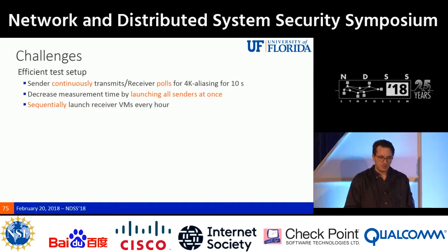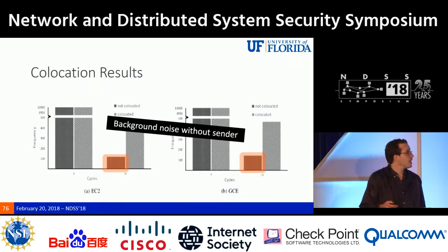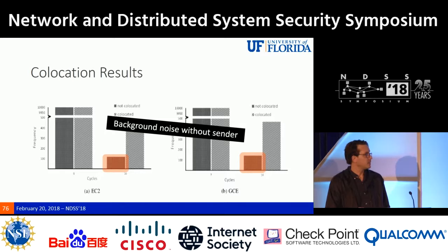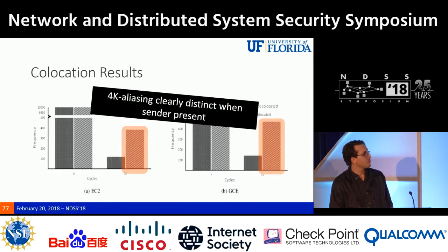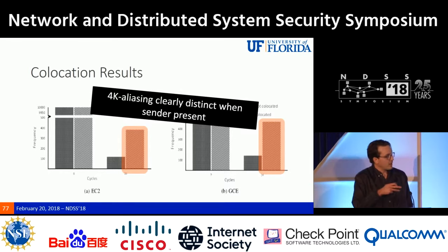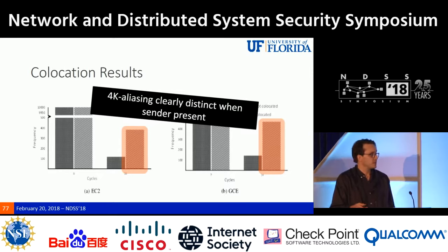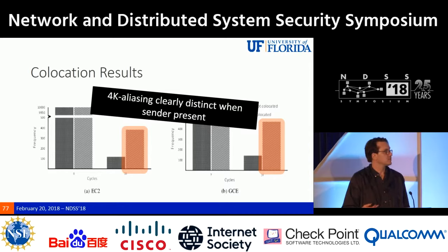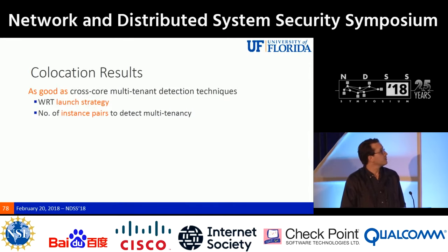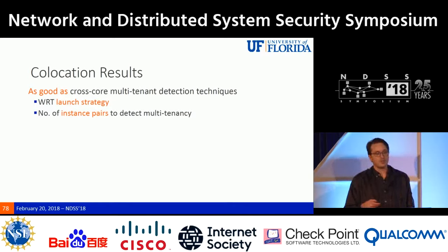On Amazon EC2, after launching 16 virtual machine instances, the background noise without the sender is clearly distinguishable from the 4K aliasing event when our sender VM is transmitting. On EC2 and GCE we pairwise launch 16 and 14 virtual machines respectively from separate accounts. The receiver polls for the 4K aliasing event while the sender from a separate account transmits it. We achieve multi-tenant detection comparable to cross-core techniques with respect to both launch strategy and number of instance pairs required.